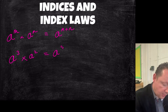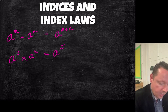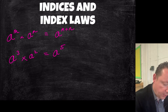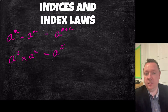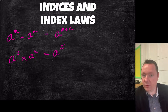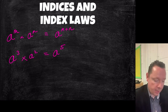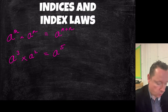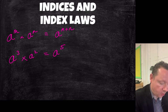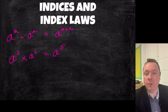Notice it has to be the same base — a. It cannot be a different thing here and here. It can't be a cubed times b squared; that doesn't give you the rule. It has to be exactly the same. And that works with numbers as well — it could be three cubed times three squared, that'd be three to the power of five.